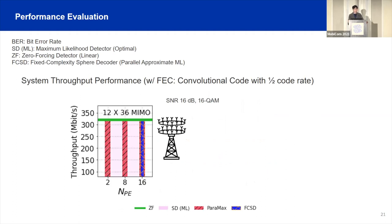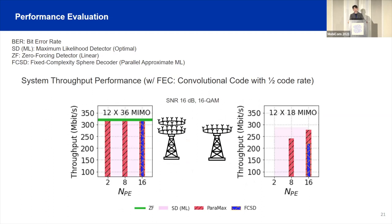Looking at system throughput considering forward error correction — and this system assumes WLAN — the BER performance levels observed are sufficient, so all detectors achieve near-ML throughput in the baseline case. However, if we halve the number of base station antennas, zero-forcing and linear detectors start to perform very poorly. By reasonably assigning more processing elements, Paramax can still achieve very good performance. This implies that given a fixed number of base station antennas, Paramax can support more devices simultaneously.